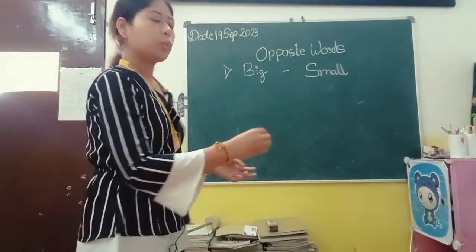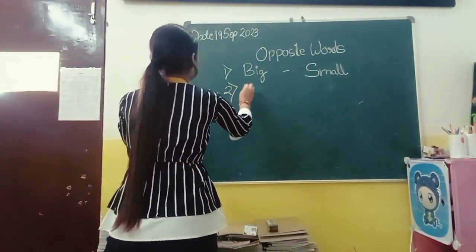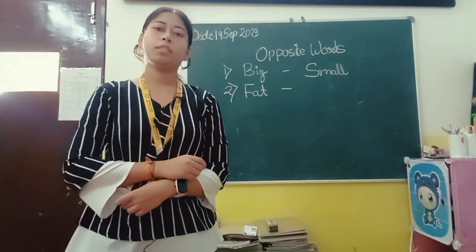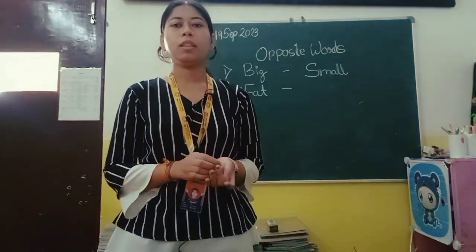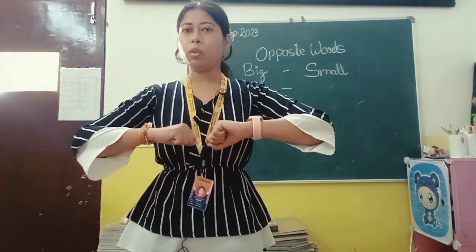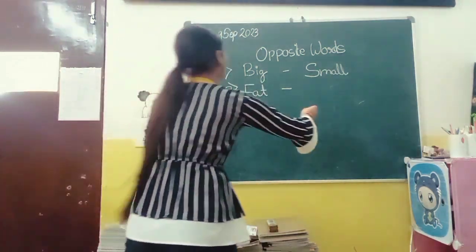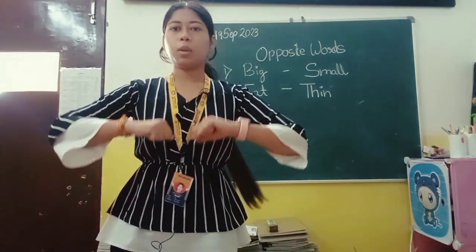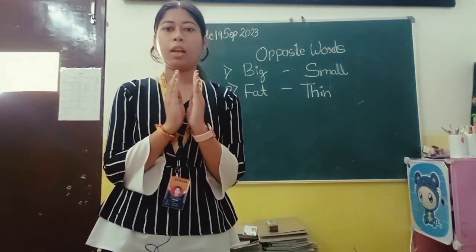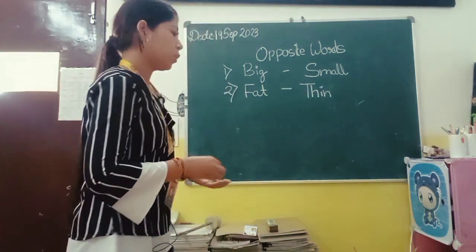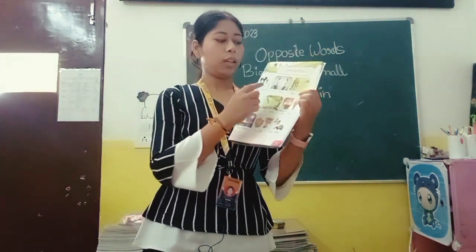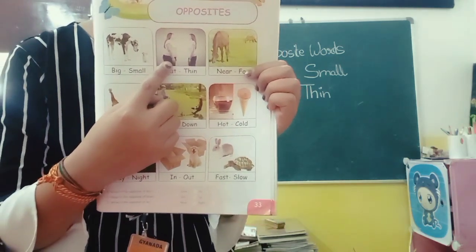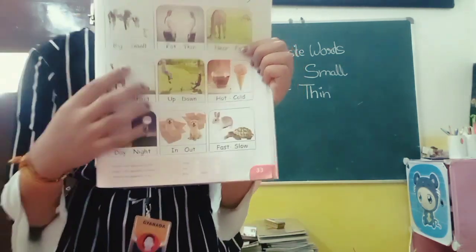The next word is 'fat'. What is the meaning of fat? Fat means mota. And the opposite word of fat is 'thin'. Fat means mota and thin means patla. For example, two pictures are given here — this is fat and this is thin. Fat means mota and thin means patla.